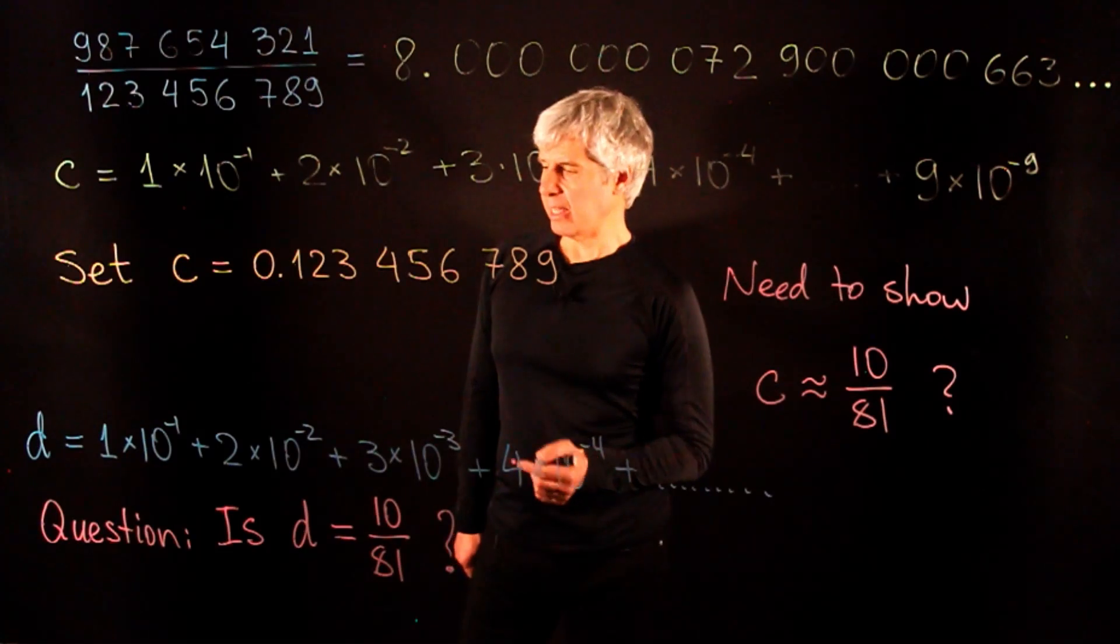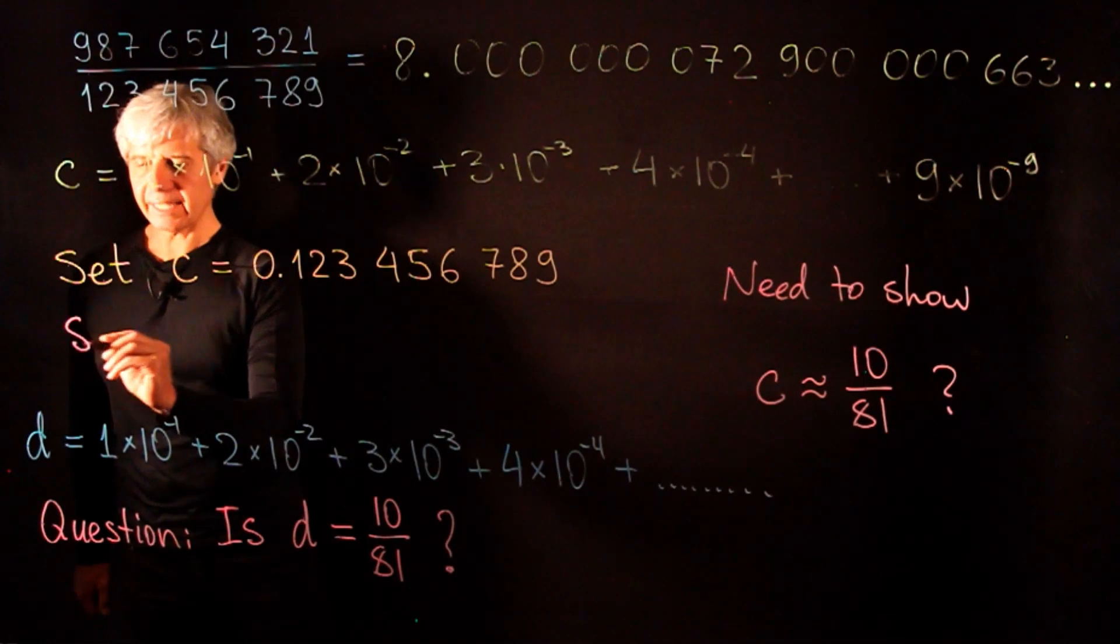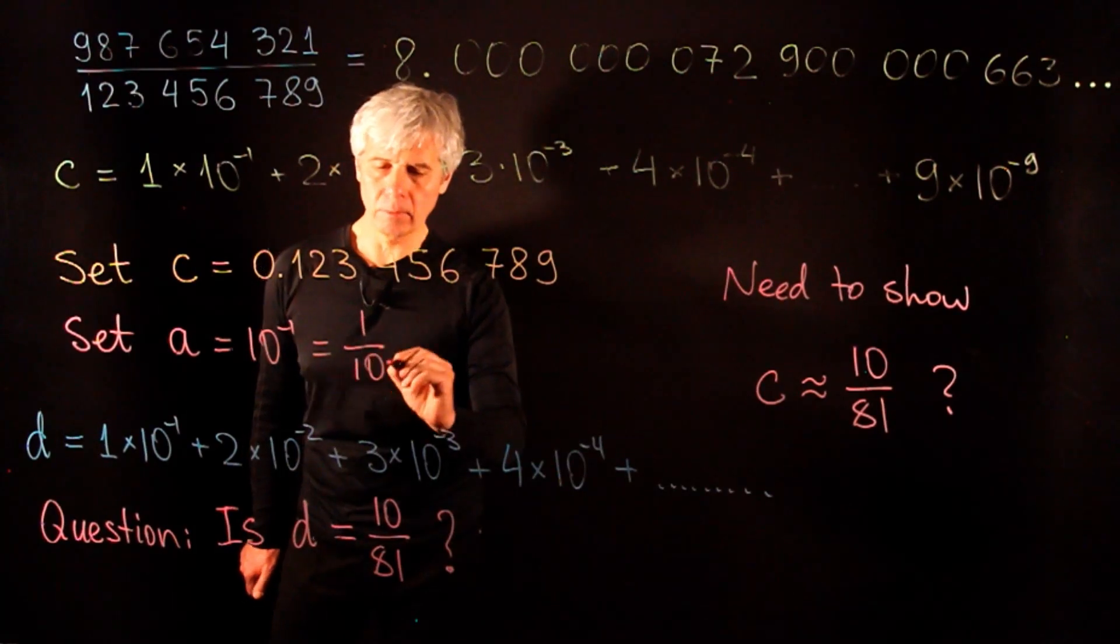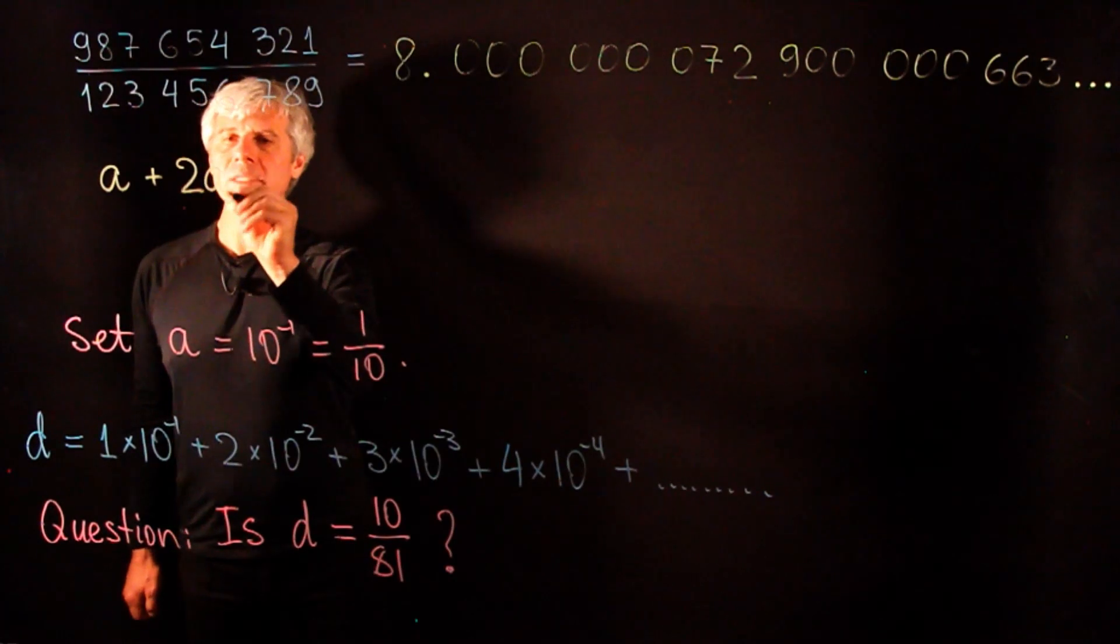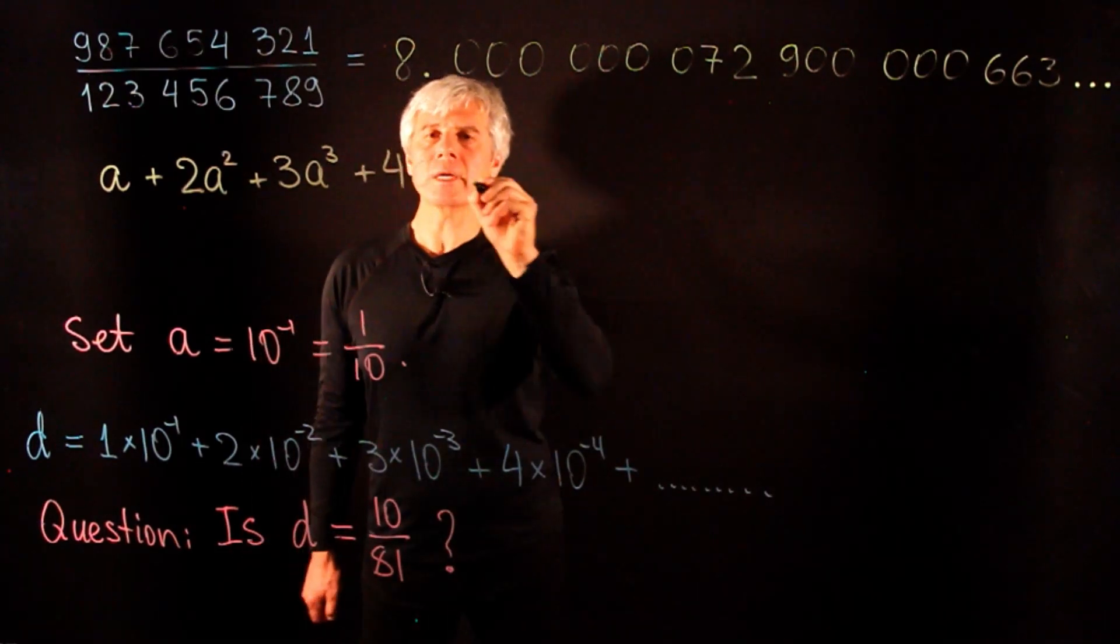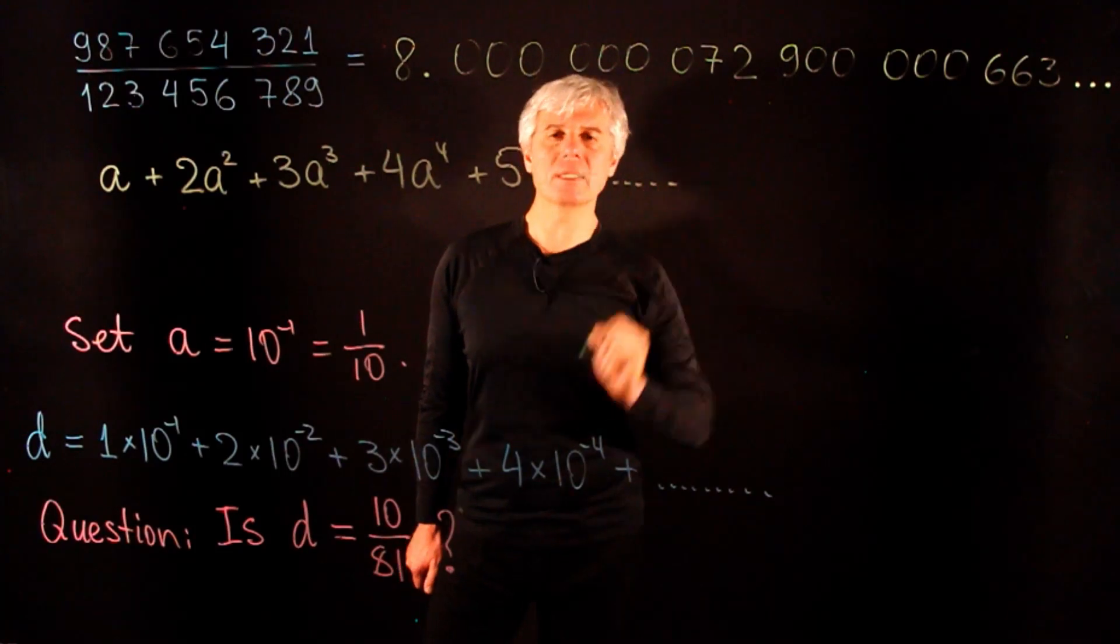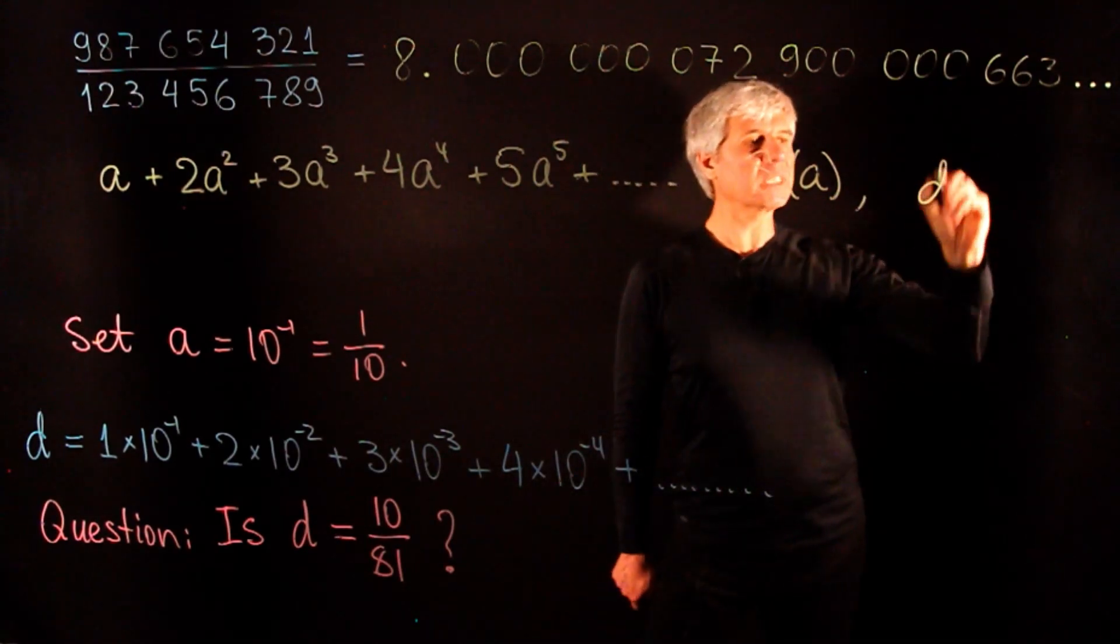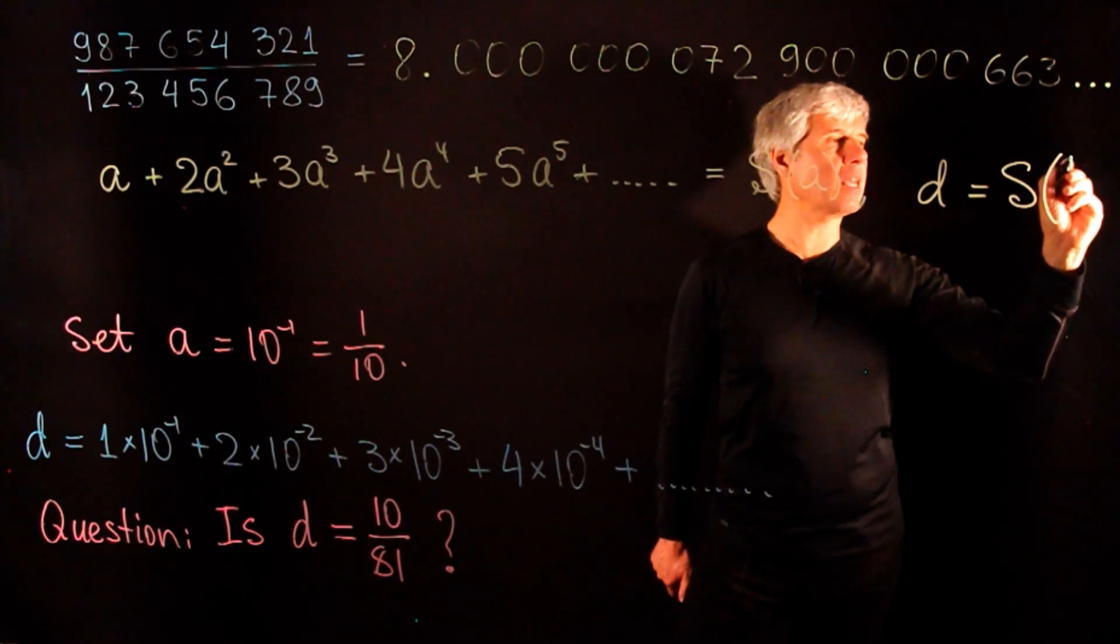One useful trick in mathematics is that problems may become simpler if we make them more general. Let us set a to be 10 to the negative 1 or 1 tenth. So the expression that we will need to compute will be a plus 2a squared plus 3a cubed plus 4a to the power of 4 plus 5a to the power of 5 and all the way to infinity. So let us call this s of a and the number d here is simply equal to s evaluated at a equals 1 tenth.